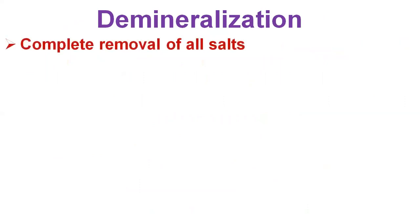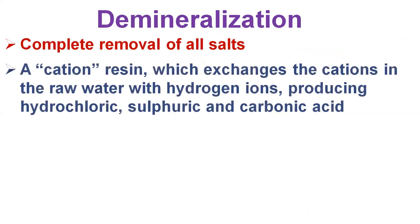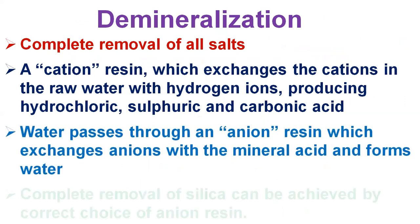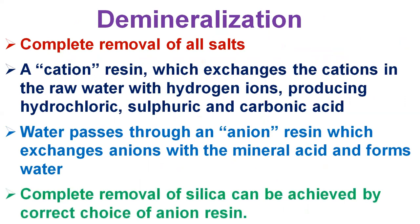Demineralization is the complete elimination or removal of all salts. This is achieved by using a cation resin, which exchanges cations in the raw water with hydrogen ions, producing hydrochloric, sulfuric and carbonic acid. Carbonic acid is removed in a degassing tower in which air is blown through the acid water. Following this, the water passes through an anion resin, which exchanges anions with the mineral acid — that is sulfuric acid — and forms water. Regeneration of cation and anion resins is necessary at intervals using mineral acid and caustic soda respectively. Complete removal of silica can be achieved by the correct choice of anion resin.